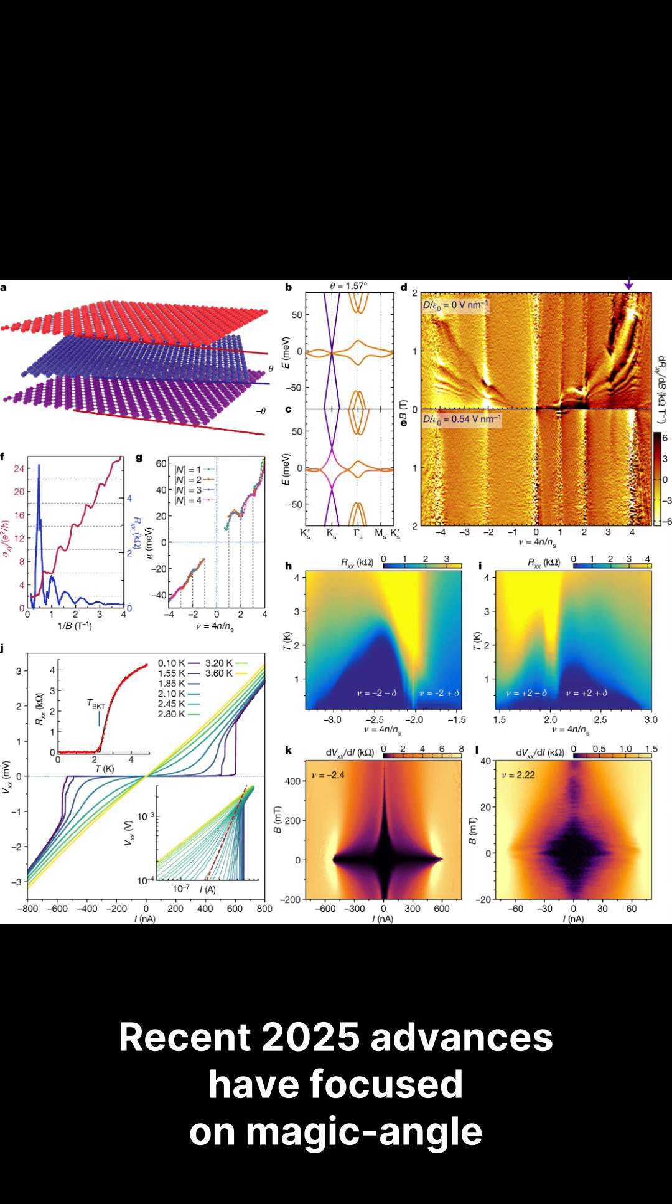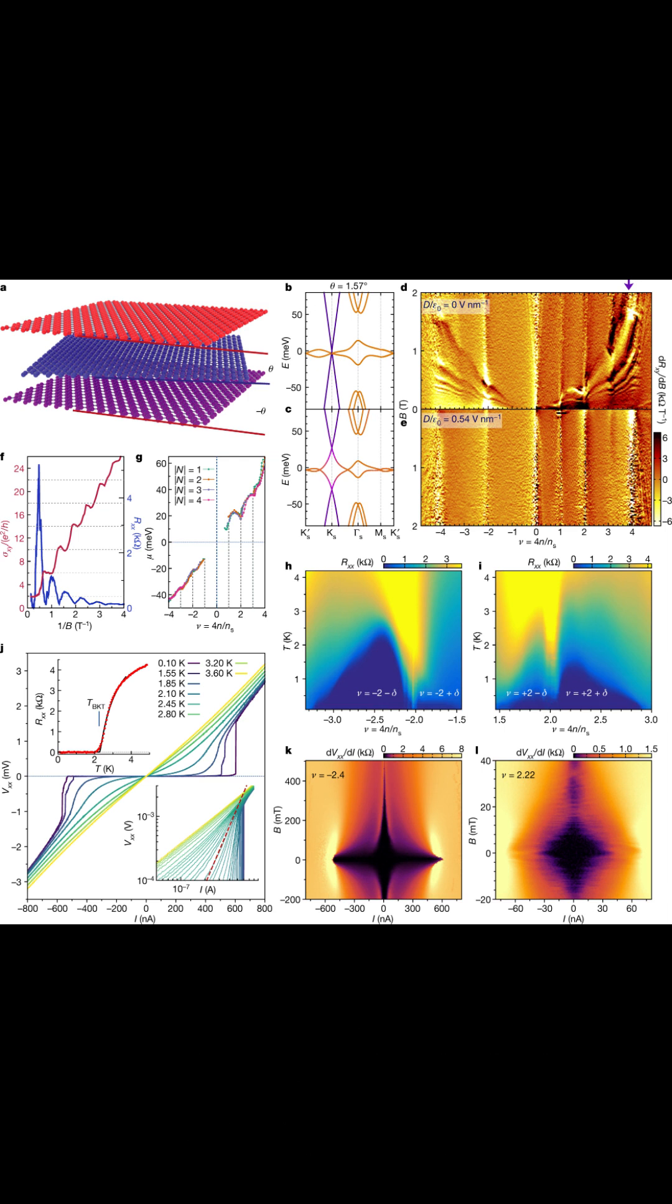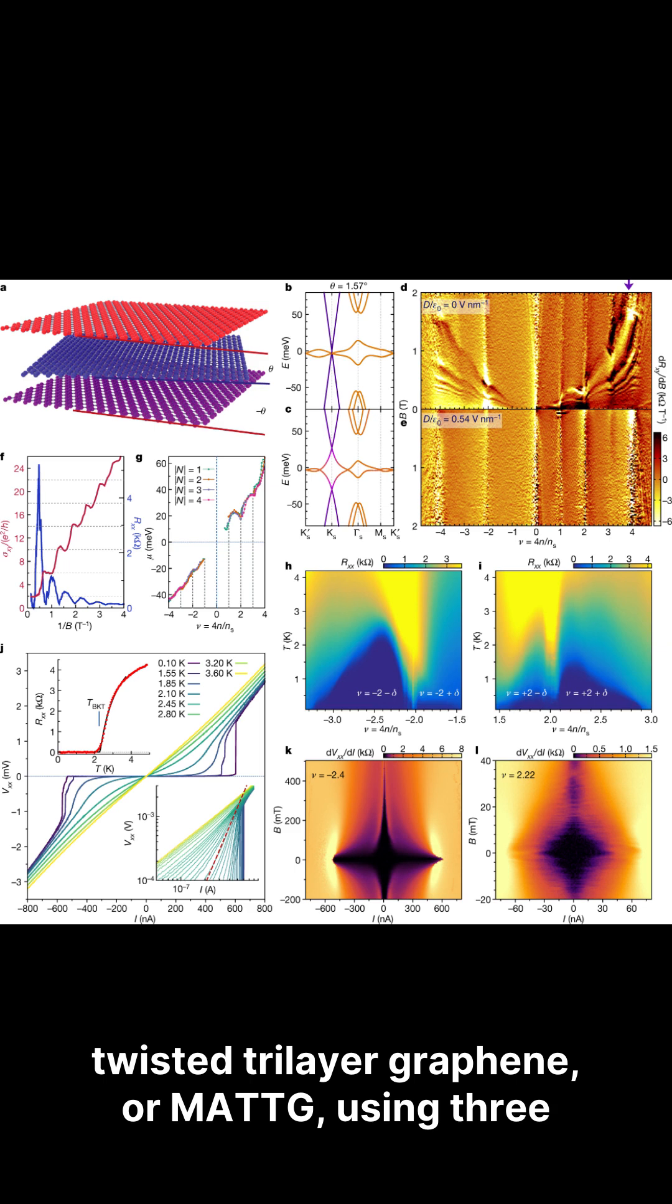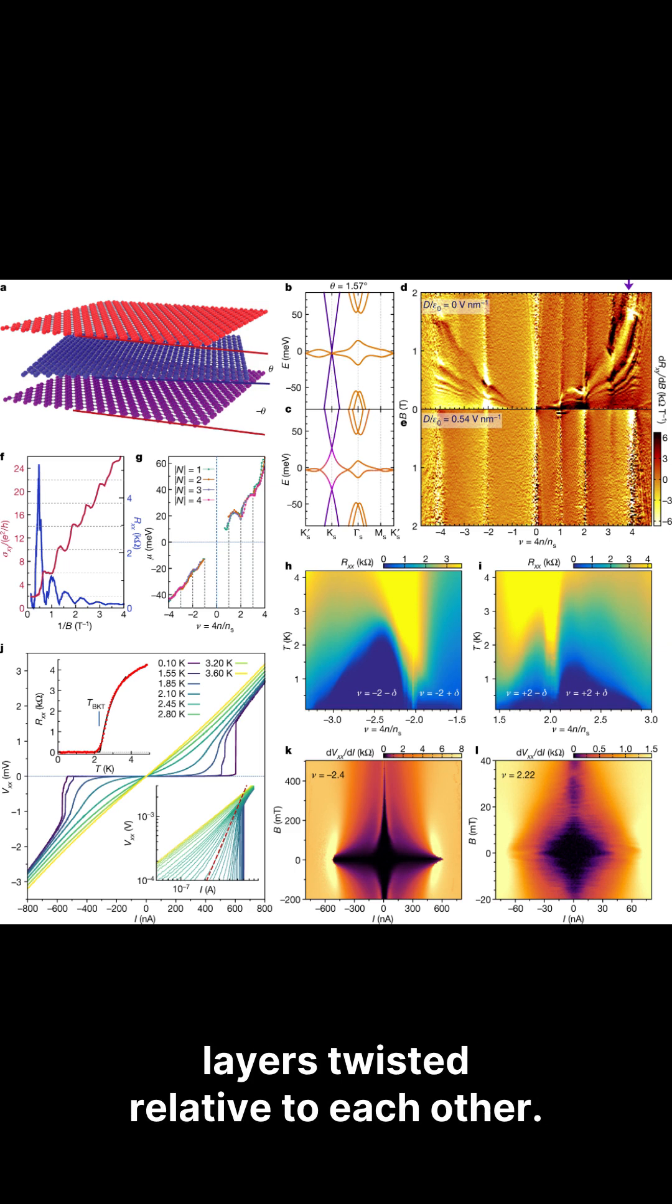Recent 2025 advances have focused on magic angle twisted trilayer graphene, or MATTG, using three layers twisted relative to each other.